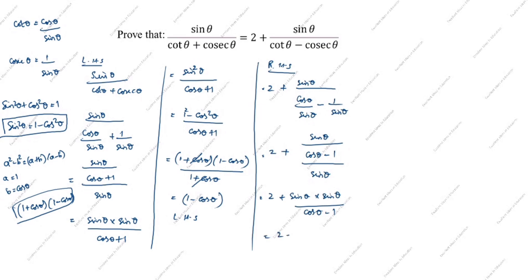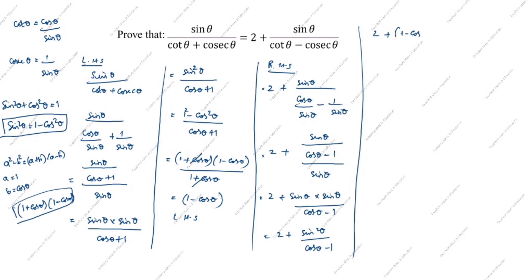Next step: sin²θ divided by (cos θ minus 1). We apply sin²θ = 1 minus cos²θ, which factors as (1 + cos θ)(1 − cos θ). So we get (1 + cos θ)(1 − cos θ) divided by (cos θ minus 1). We rewrite the denominator as minus (1 minus cos θ). So we have minus (1 + cos θ)(1 − cos θ) divided by (1 minus cos θ).